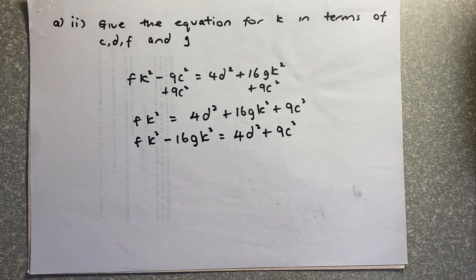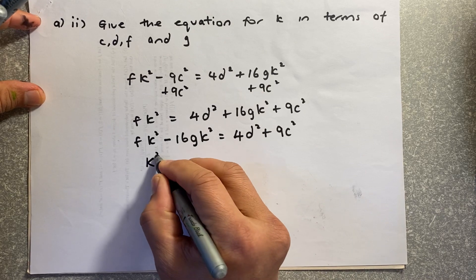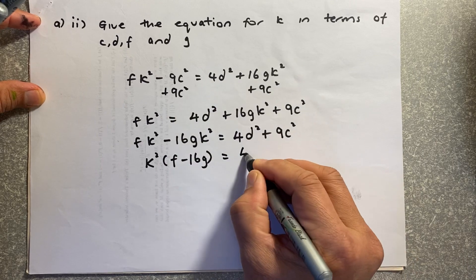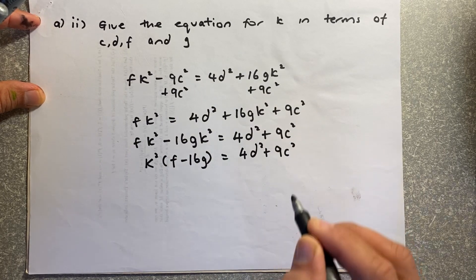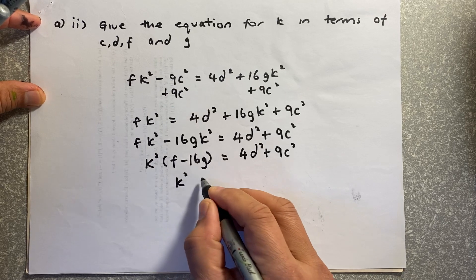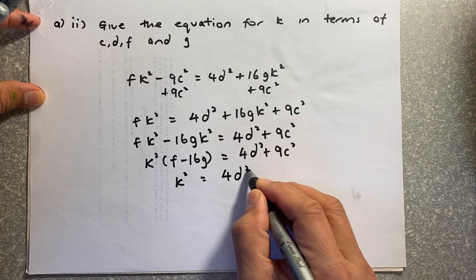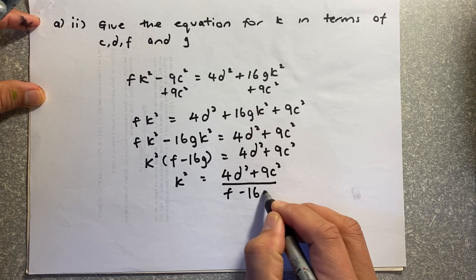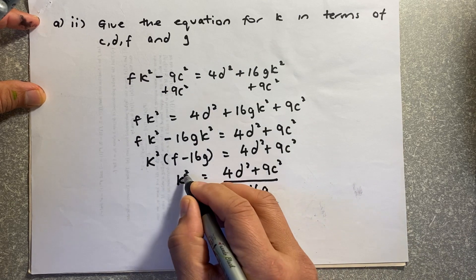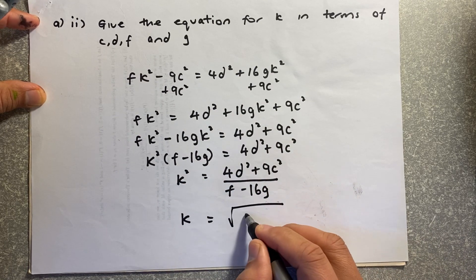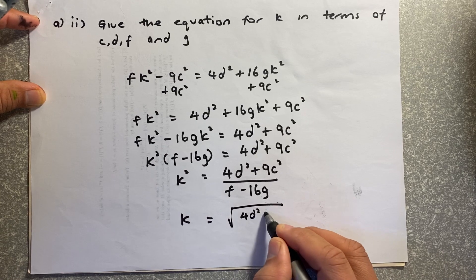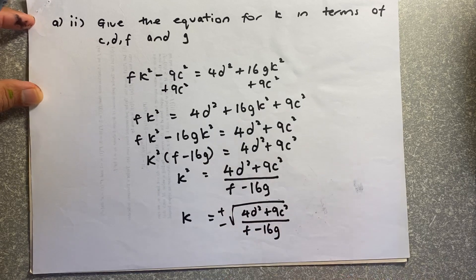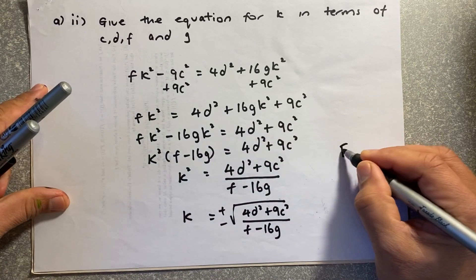This is the hardest part: factorize k² out to get k²(f − 16g) = 4d² + 9c². Then divide both sides by (f − 16g), giving k² = (4d² + 9c²) / (f − 16g). Finally, take the square root: k = ±√[(4d² + 9c²) / (f − 16g)]. That is an excellence.